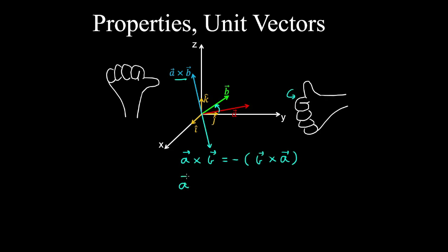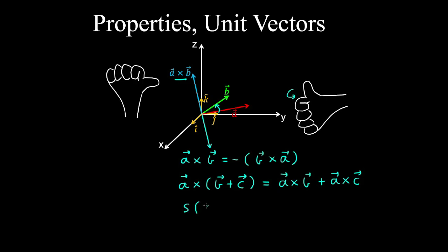The cross product is also distributive over addition: a cross (b + c) equals (a cross b) plus (a cross c). Similarly, taking a scalar s multiplied by the cross product between two vectors equals s·a crossed with b, and that also equals a crossed with s·b.